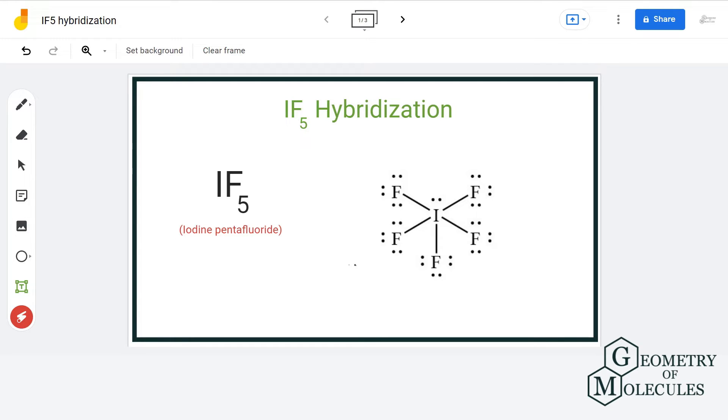One of the easiest ways to find hybridization of any molecule is by counting the number of lone pairs of electrons attached to the central atom and the number of sigma bonds it forms. This is known as the steric number. In other words, steric number equals the summation of sigma bonds and lone pairs attached to the central atom.